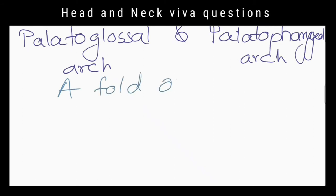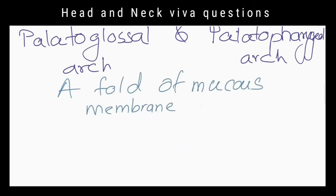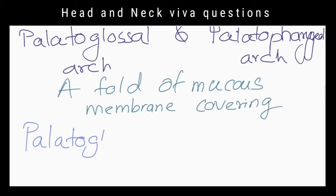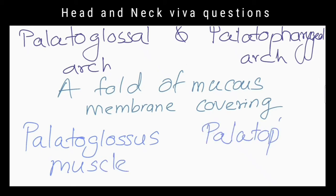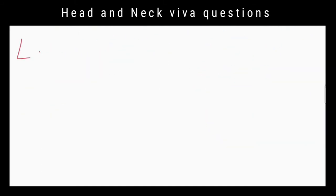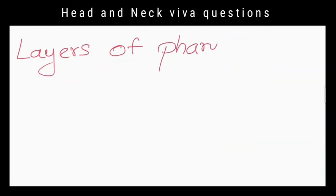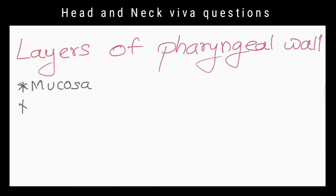How are those arches formed? The palatoglossal arch is formed by a fold of mucous membrane covering the palatoglossus muscle. The palatopharyngeal arch is formed by a fold of mucous membrane covering the palatopharyngeal muscle.